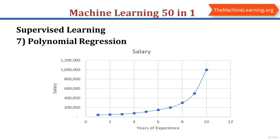The next topic is polynomial regression. Polynomial regression is similar to linear regression, but data points in polynomial regression are in a curve shape. If we apply linear regression in this scenario, it's not going to give the right value. Polynomial regression models the relationship between independent variable X and dependent variable Y as an nth degree polynomial. Its advantages include fitting a broad range of functions and wide ranges of curvature, providing the best approximation of the relationship. The main disadvantage is that it is too sensitive to outliers.